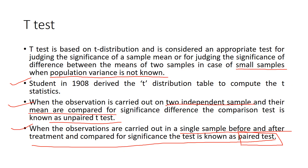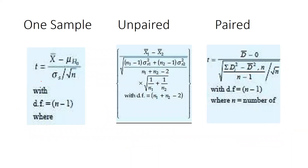We apply an unpaired t-test when there are two independent samples and we compare their means. For example, if I want to compare MBA Section A results with MBA Section B results, both are two independent units with entirely different students. Since the two groups are independent, we use an unpaired t-test.